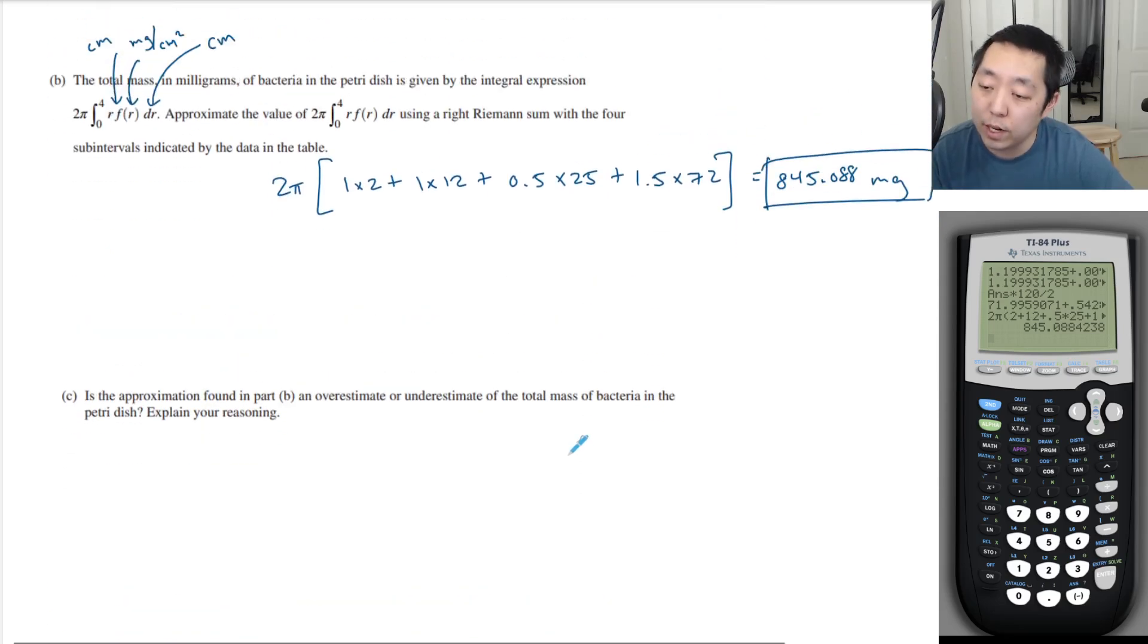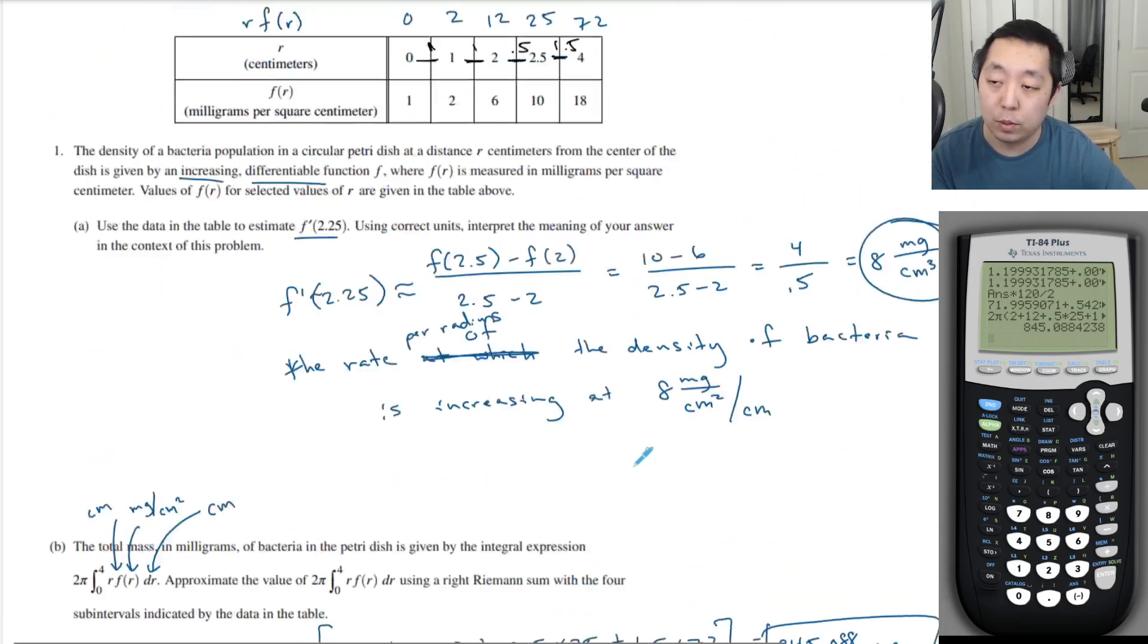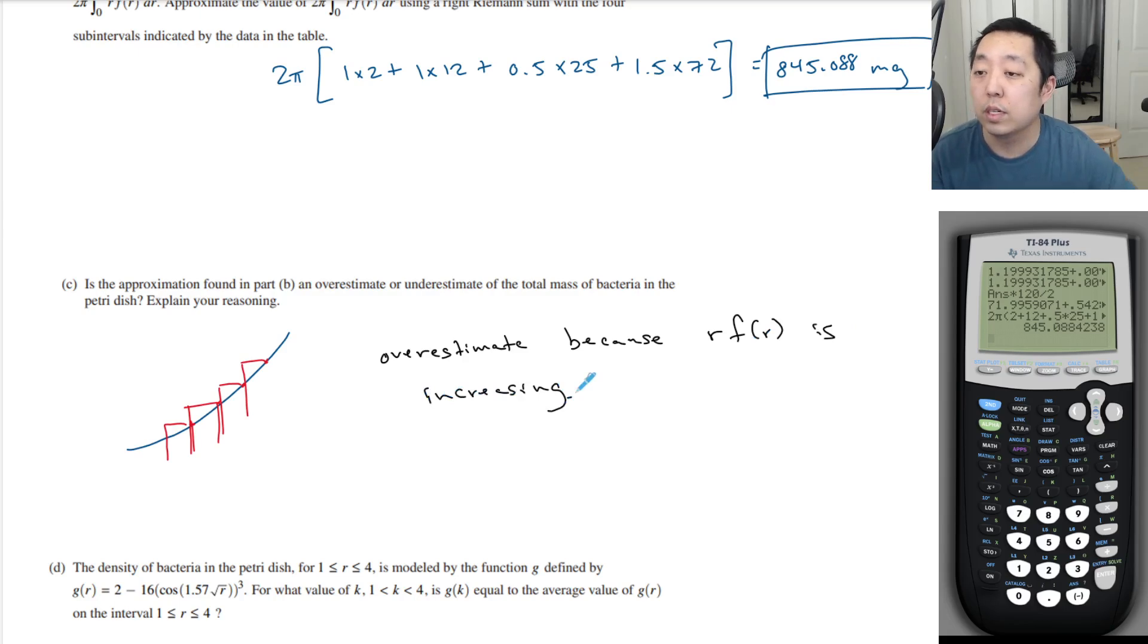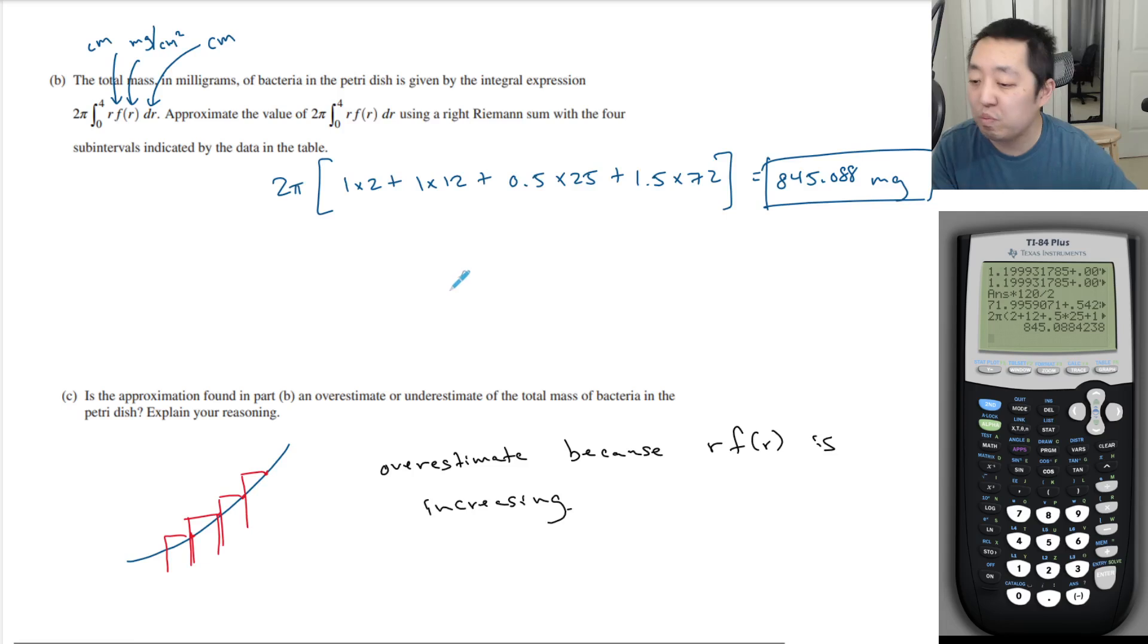Okay, is the approximation found in part B an overestimate or underestimate of the total mass of bacteria in the petri dish? Explain. So you're doing a right sum, and whether it's an over or underestimate depends on whether the function is increasing. Because the function is increasing, if I sketch an increasing function, when you do a right point estimate, it's going to be an overestimate. Because you're picking the larger of the intervals, and so you're definitely going to overestimate this. So it is an overestimate because r times f of r is increasing. I just want to double check. I did a right Riemann sum. Okay, I think that's fair.